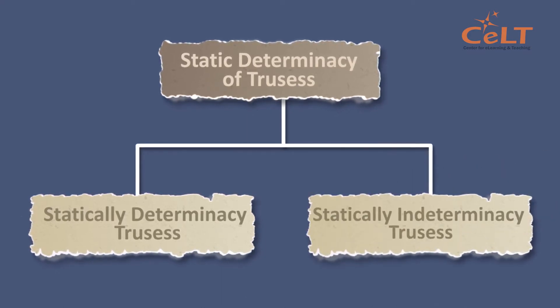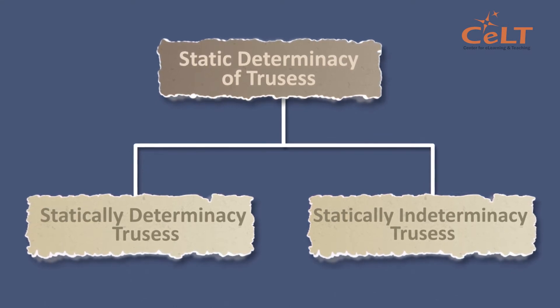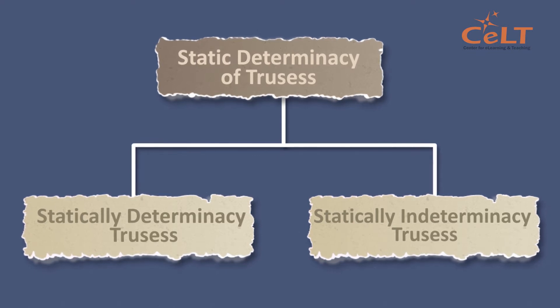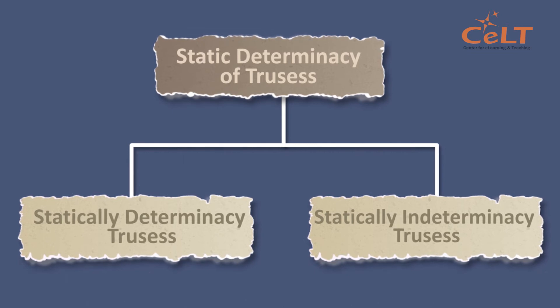A truss is considered statically indeterminate when the static equilibrium equations are not sufficient to find the reactions on the structure. There are simply too many unknowns.